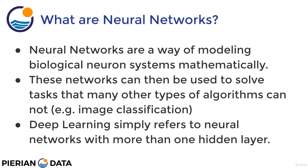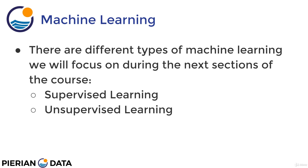Deep learning simply refers to neural networks with more than one hidden layer. There are many different types of machine learning tasks, and in the next section of the course we'll focus on two specific types: supervised learning tasks and unsupervised learning tasks. When we talk about things like classification and regression, those fall under supervised learning, so it's important to understand the distinctions between these topics.